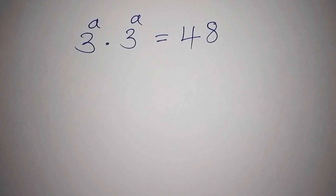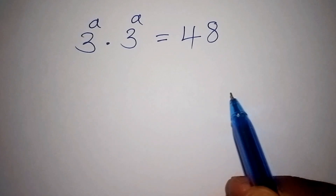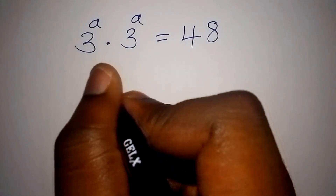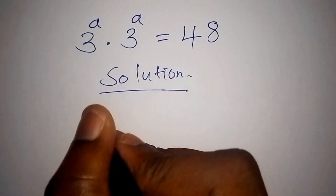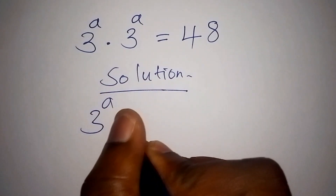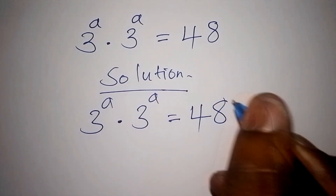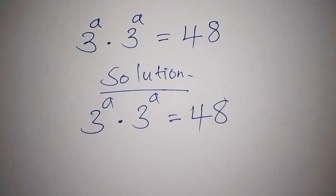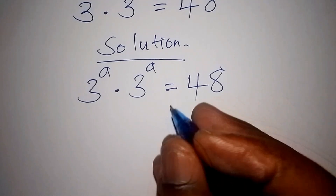Welcome! In this video we will solve a nice exponential math problem within the shortest time possible. We want to work it out step by step. Let's now start with the solution. Here we have 3 to the power of a, multiplied by 3 to the power of a, is supposed to give us 48. If you know how to work out this problem, work it out and confirm your answers with us.